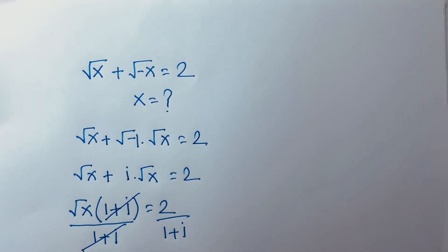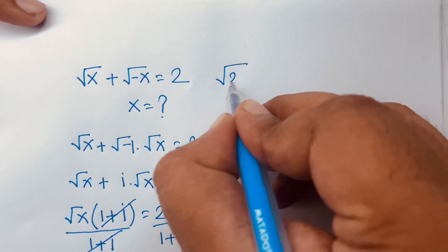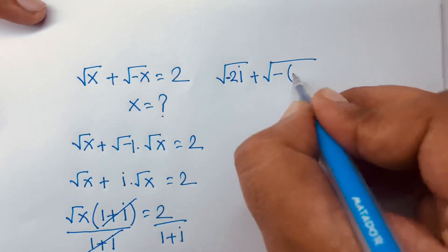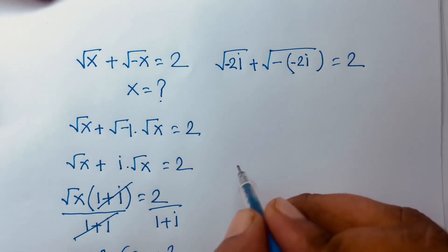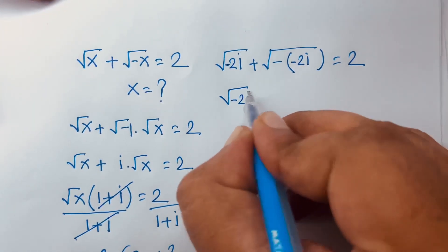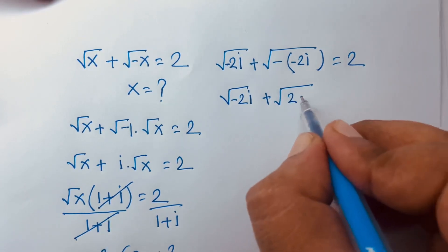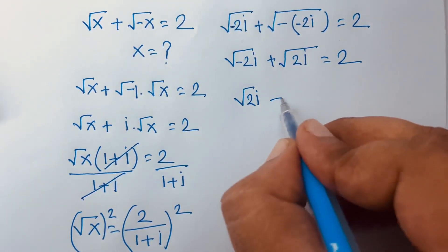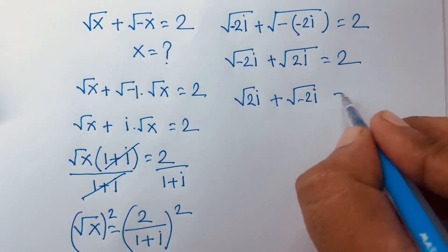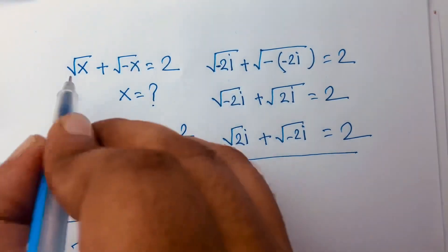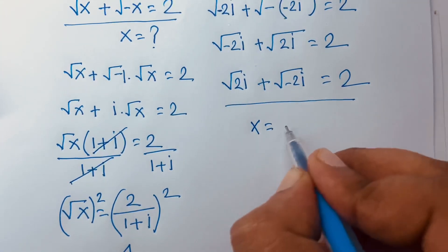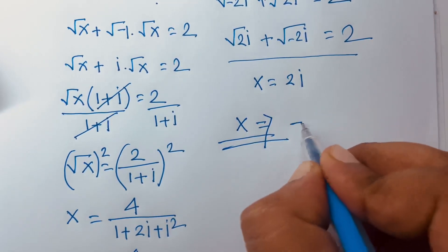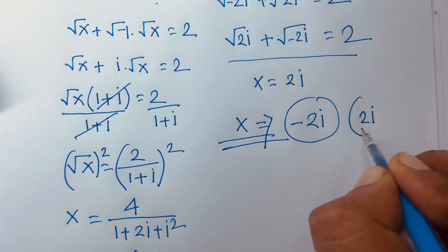Now verifying by substituting x equals minus 2i into the original equation: square root of minus 2i plus square root of minus(minus 2i) equals square root of minus 2i plus square root of 2i. Rearranging, we also identify x equals 2i as a solution. Therefore, the final answer is x equals minus 2i or plus 2i.